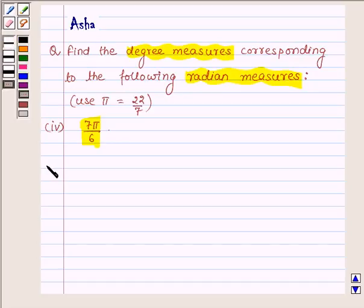So let us begin with the solution. And we have to find the degree measure of 7π/6 radian.